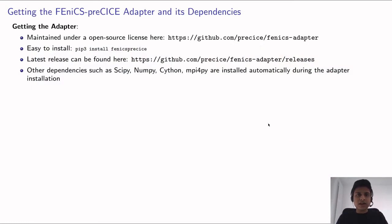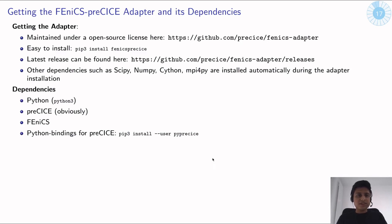Both examples are part of the tutorials repository in preCICE, where you can find the case setups for both conjugate heat transfer and fluid-structure interaction done with FEniCS. Getting the FEniCS adapter is quite easy — it is maintained under an open source license in the repository fenics-adapter within the preCICE project on GitHub. Install it simply by running pip3 install fenics-precice. Dependencies such as SciPy, NumPy, Cython, and mpi4py are installed automatically. The main dependencies are Python, preCICE, FEniCS, and most importantly the Python bindings for preCICE, which can also be installed with pip using pip3 install --user pyprecice.